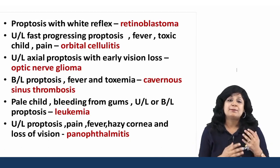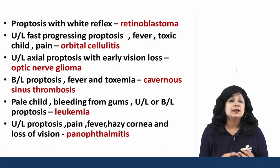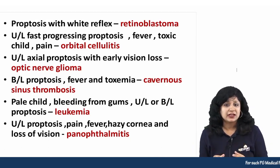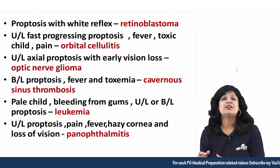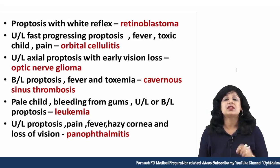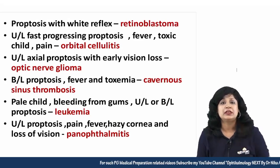If you have a pale child bleeding from the gums, with unilateral or bilateral proptosis, think about tumour — leukemias.